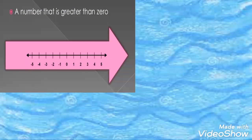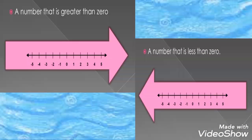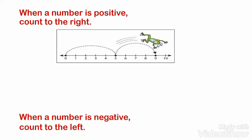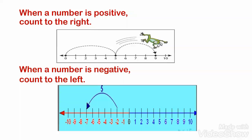What is a positive number? A number that is greater than 0. What is a negative number? A number that is less than 0. When a number is positive, count to the right. When a number is negative, count to the left.